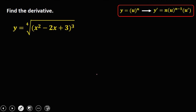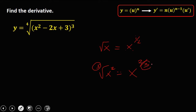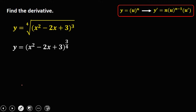For this given: the fourth root of (x squared minus 2x plus 3) to the power 3. First, convert the radical to exponential form. For example, square root of x is x to the power 1/2, and cube root of x squared is x to the power 2/3 — the index becomes the denominator. So this expression becomes (x squared minus 2x plus 3) to the power 3 over 4.